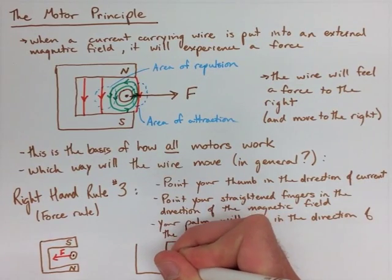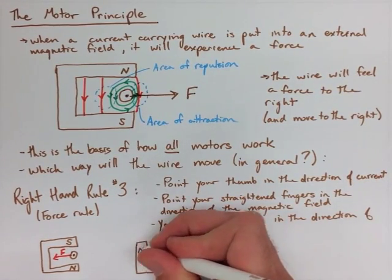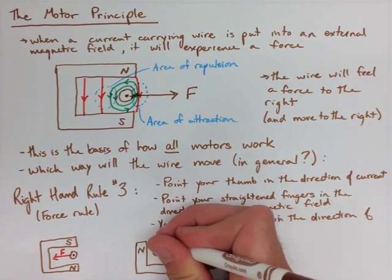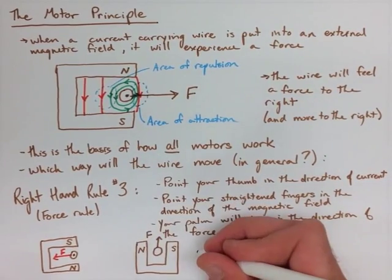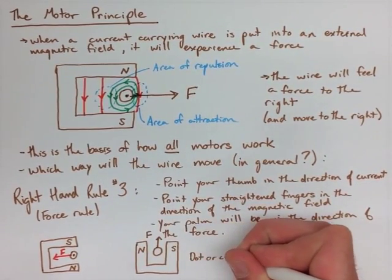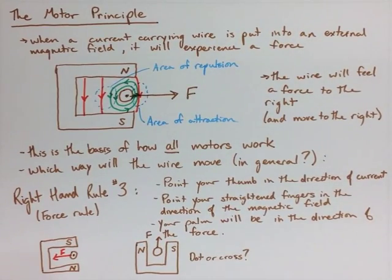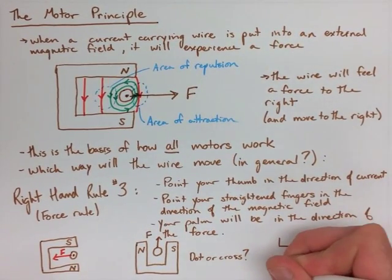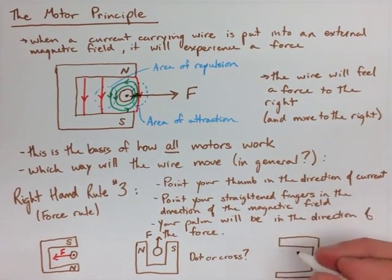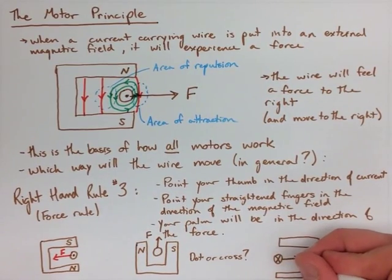In the next two diagrams in the first one, try to predict whether it would be a dot or a cross for the current, knowing the force is going up, and then say where the north and the south poles of the following magnet are, current going into the page and our force going to the right.